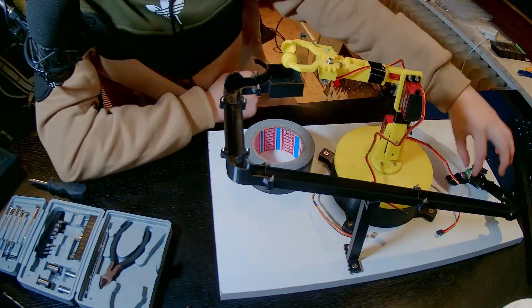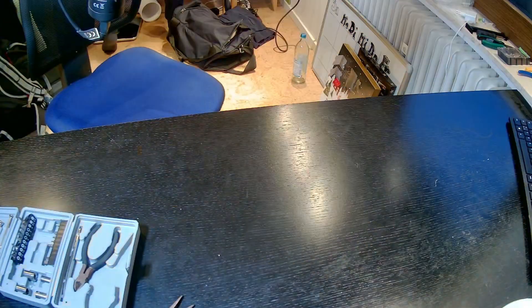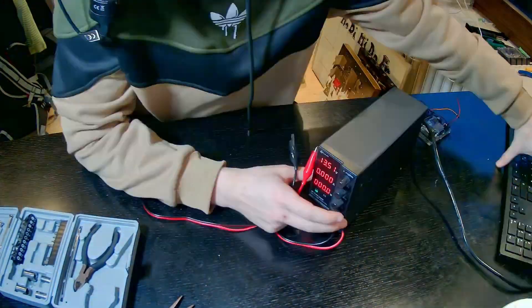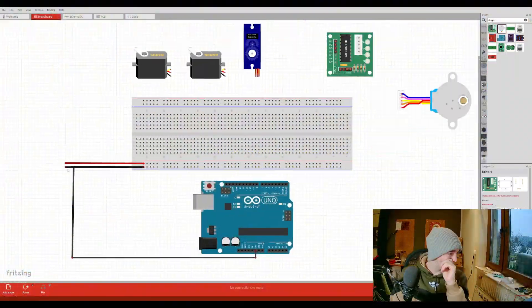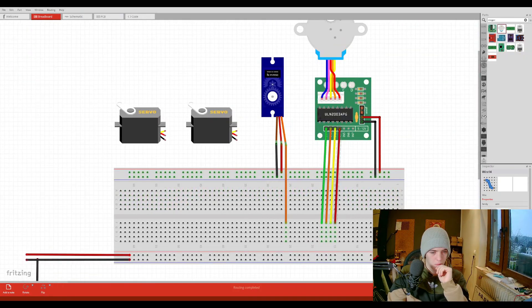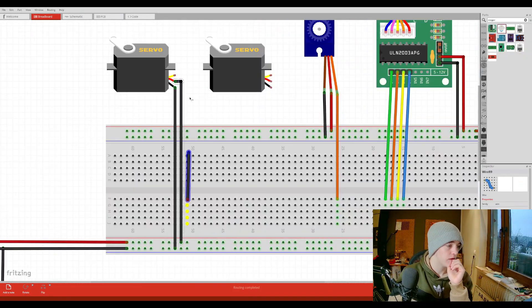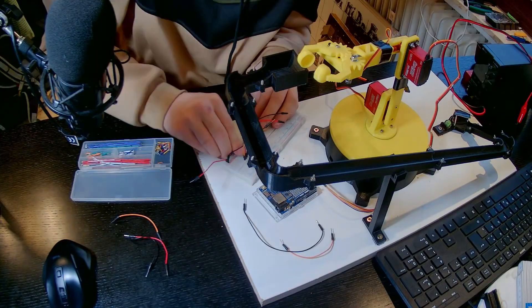So after I mounted the whole track system I could continue to the wiring. There I first created a circuit diagram so that I would know where everything was connected. Then I wired up everything which took me some time.